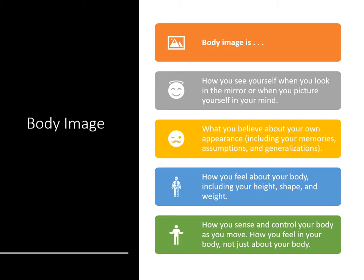Body image is how you see yourself when you look in the mirror or picture yourself in your own mind. It's what you believe about your own appearance — including memories, assumptions, and generalizations you may have made in the past, particularly in relation to things that people have told you, such as parents, carers, or peer groups. It's how you feel about your body including your height, shape and weight, and how you sense and control your body as it moves.